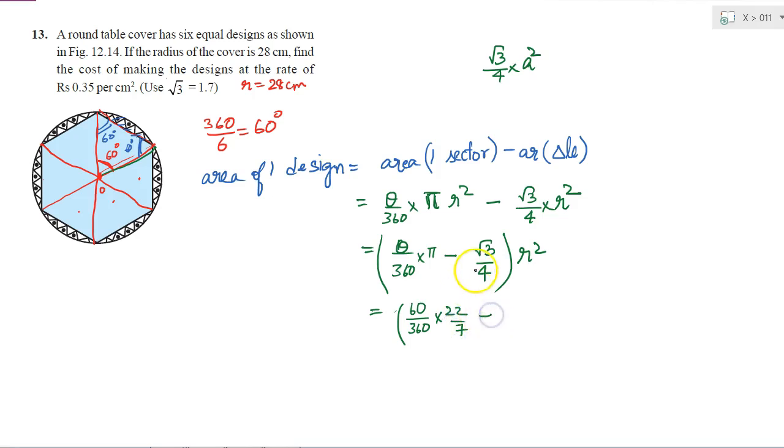minus √3 by 4 into r². So what is the value of r²? 28 into 28 centimeter². This is the area of 1 design.